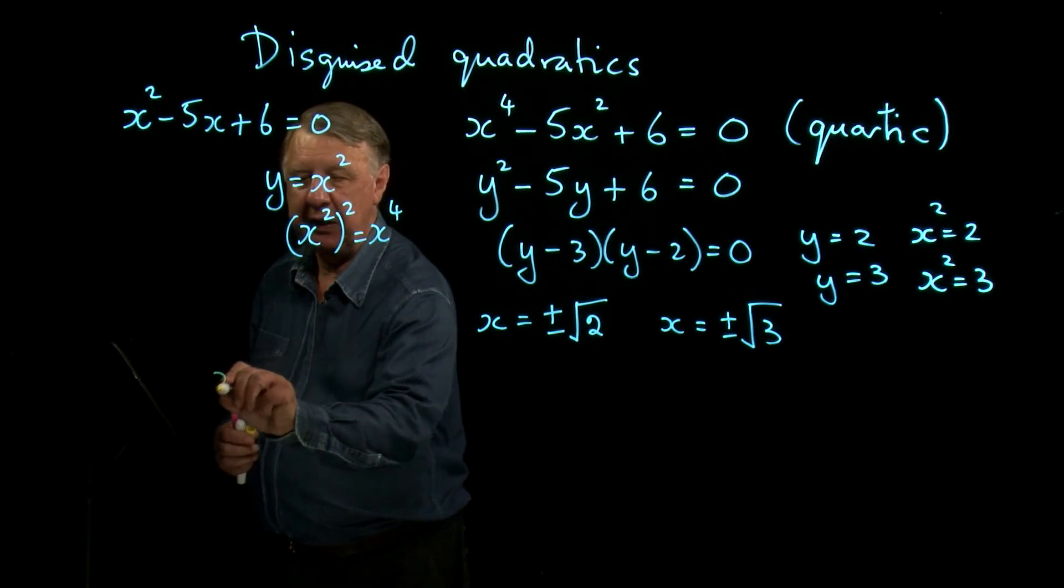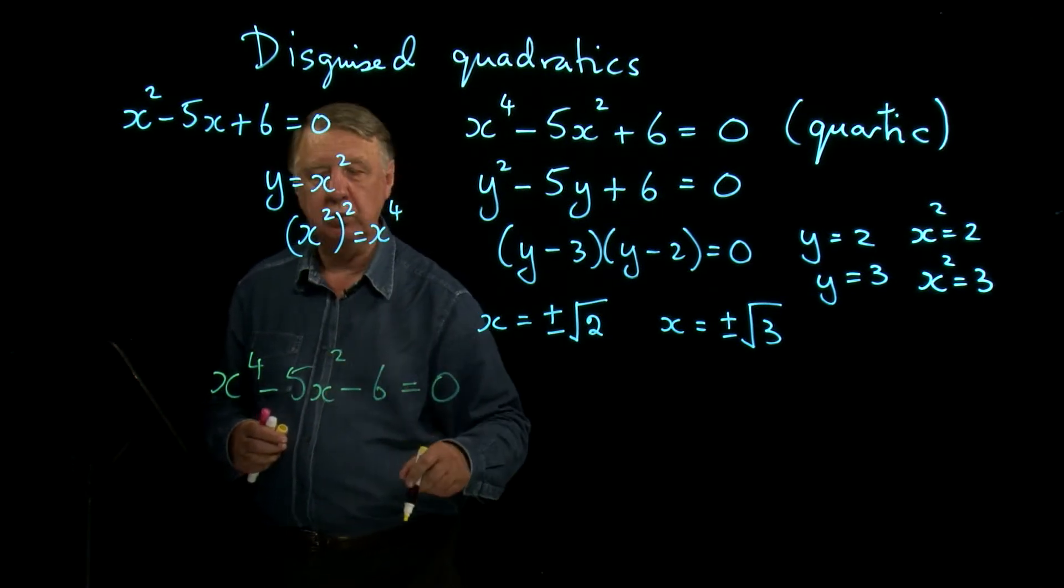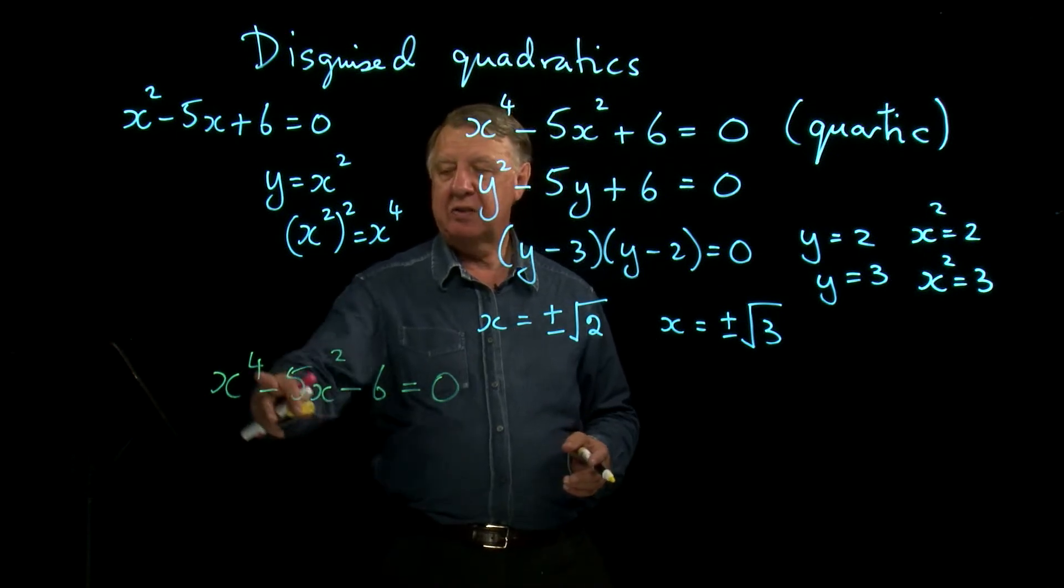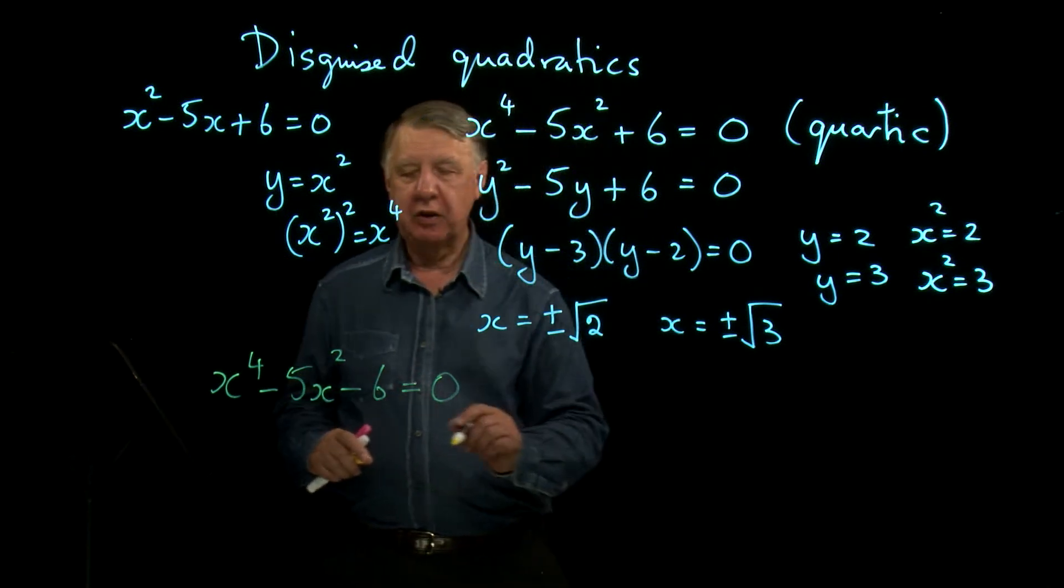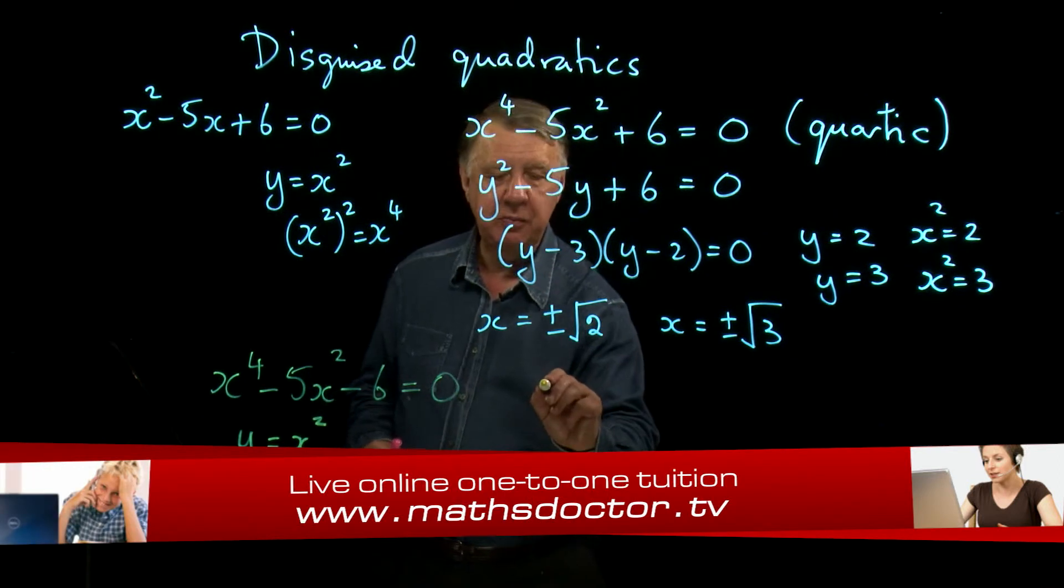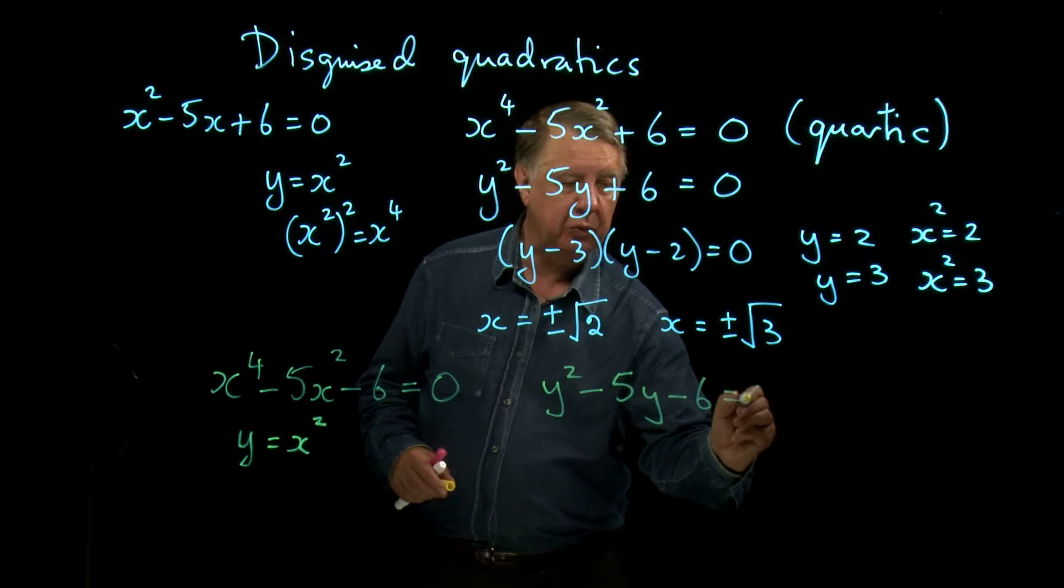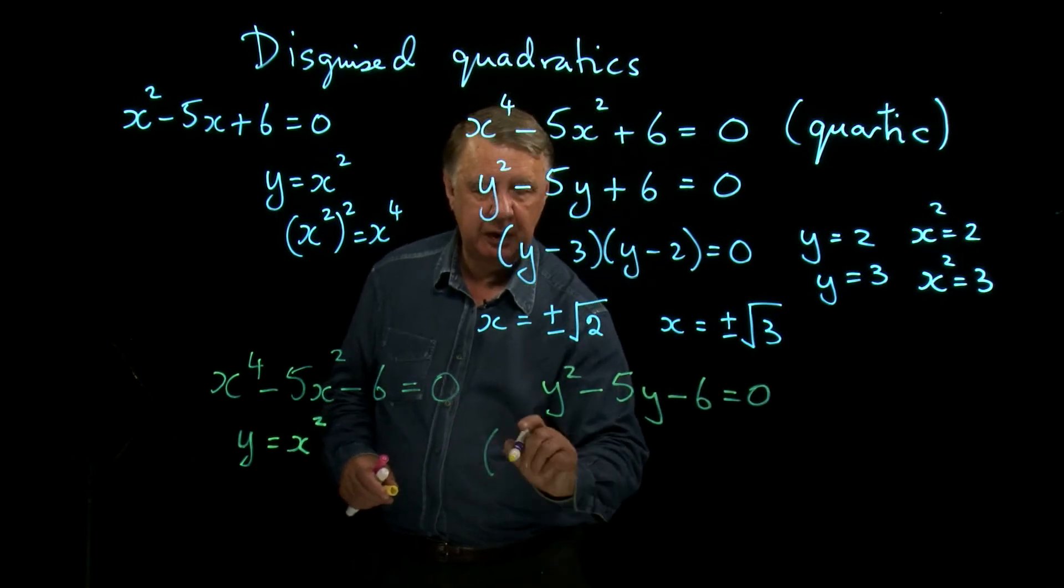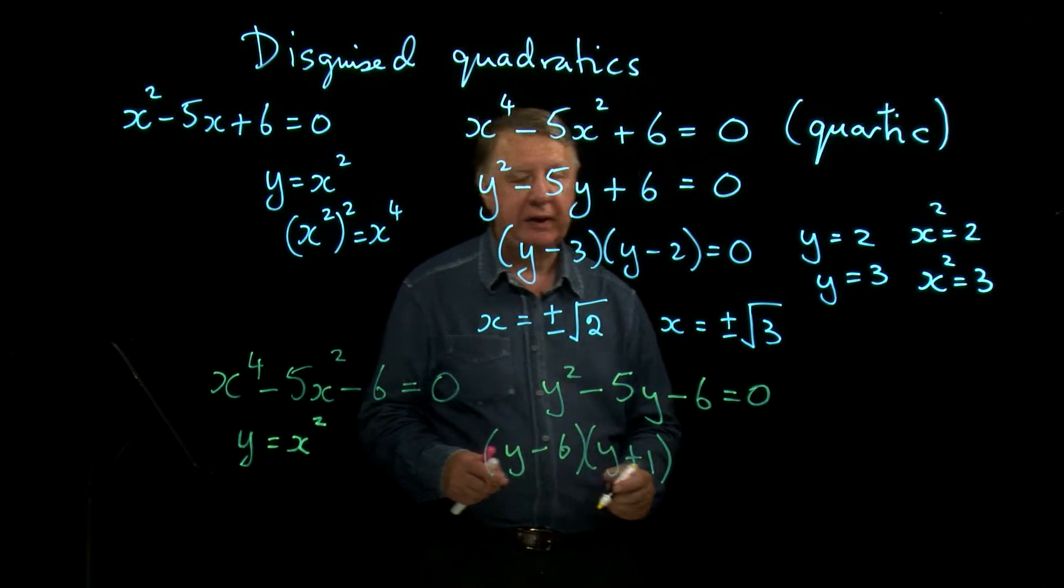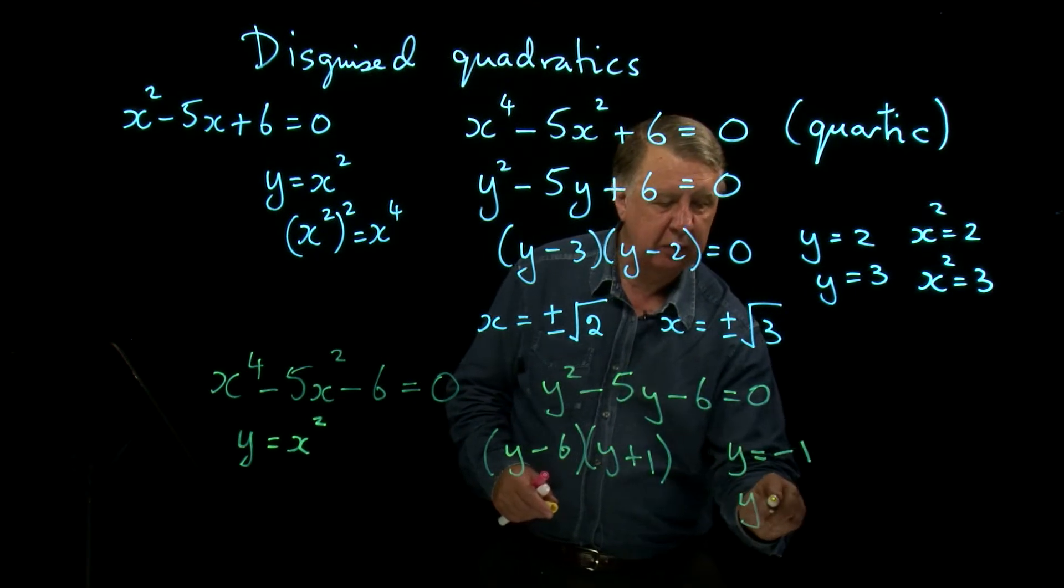Let's try another example then. x to the 4 minus 5x squared minus 6 equals 0. And we're going to use the same technique. We look at it, we say it's a quartic, but I can recognise here that it's quadratic in nature. So I'll put y equal to x squared, as I did in the example above. And so this time, my quadratic equation is y squared minus 5y minus 6 equals 0. This factorises as y minus 6, y plus 1. So I get y equal to minus 1 or y equals 6.